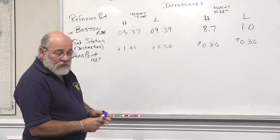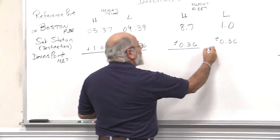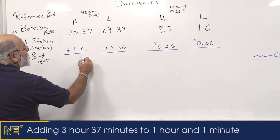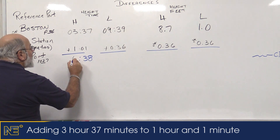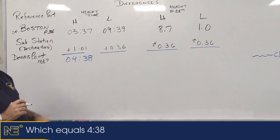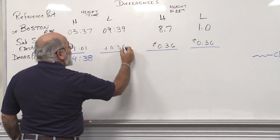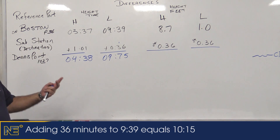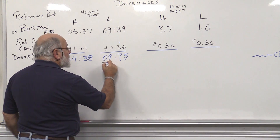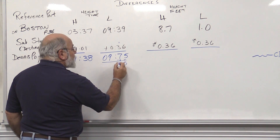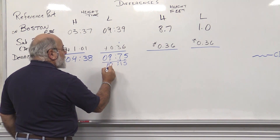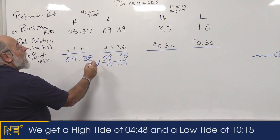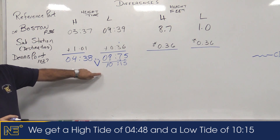Now we do the math. Adding the correction of plus 1 hour 1 minute to the Boston high tide of 0337 gives us 0438 for Dennis Port's corrected high tide. Adding plus 36 minutes to 0939 — noting that 9+6 minutes gives 75, which we convert to carry an extra hour — gives us a corrected low tide time of 1015. Our 9:14 arrival fits between 0438 and 1015.